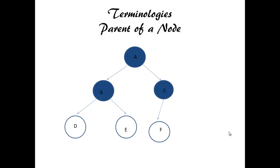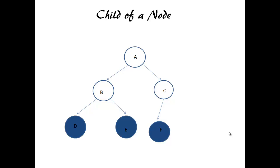Parent node: If a node has a child, it is called parent node. Here, A is a parent of B and C. B is a parent of D and E. C is a parent of F. D, E are the children for B. F is a child for C. B, C are the children for A.